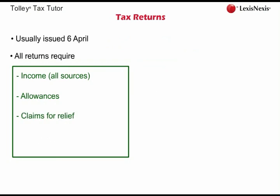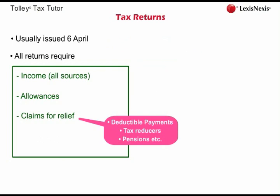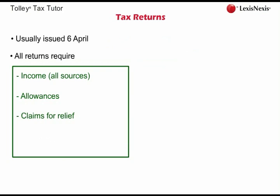Any other claims for relief also have to be made on the tax return — for example, any deductible payments, tax reducers, contributions to pension schemes, and so on, which qualify for tax relief. As well as sending the taxpayer a basic tax return, HMRC will add on separate supplementary pages depending on the particular source of income. For example, employees will receive employment pages, those with rental properties receive property income pages, and so on. Taxpayers with many sources of income will complete the basic return and add on all the supplementary pages.